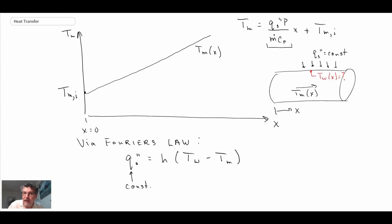If we're in the fully developed flow region outside of entrance region effects, then h as well is going to be a constant for pipe flow. And so what that tells us is that this difference also needs to be a constant.